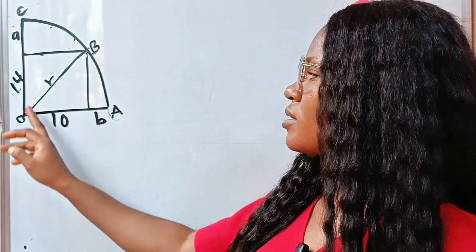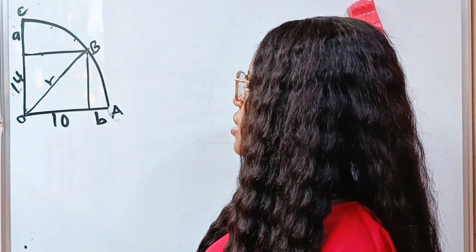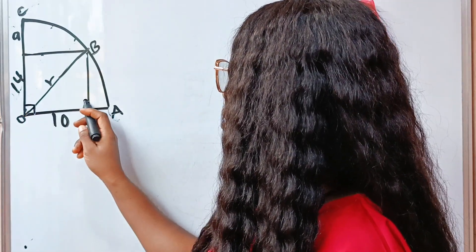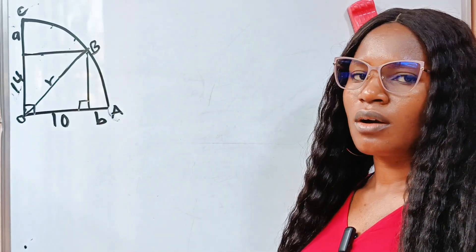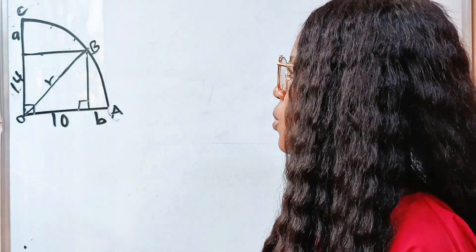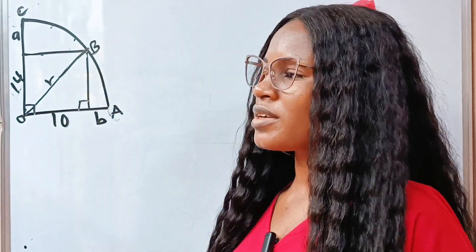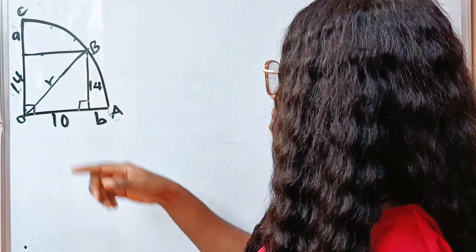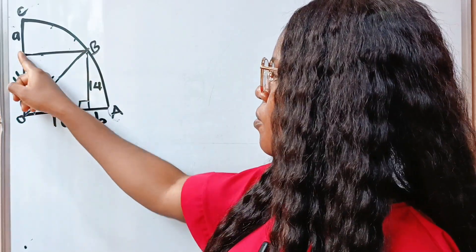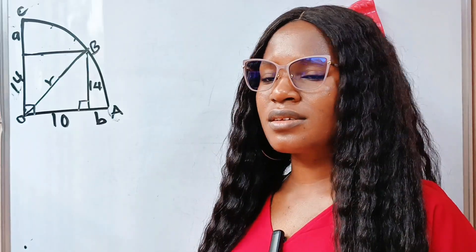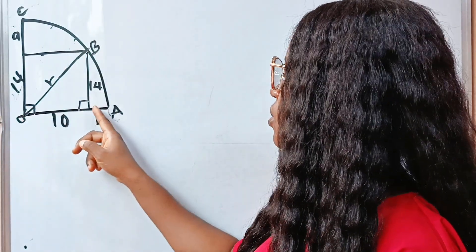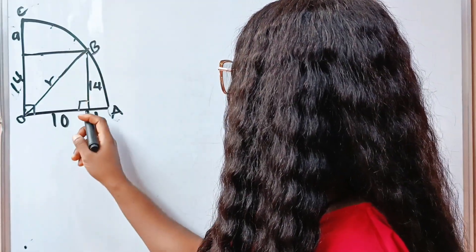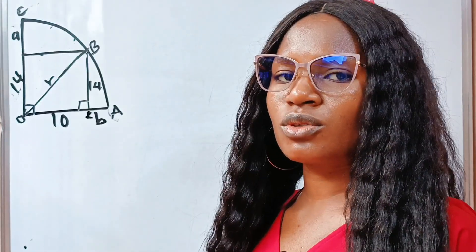If this is a rectangle, then definitely this is a right angle, and this place is right-angled as well. Also, the opposite sides of a rectangle are equal, so it means that this side is 14 as well — from here to here is equal to from here to here. Now, we have a special type of triangle called the right-angle triangle. Triangle O, B, K — let's call this K — is a right-angled triangle.